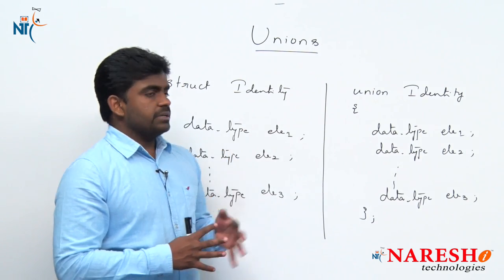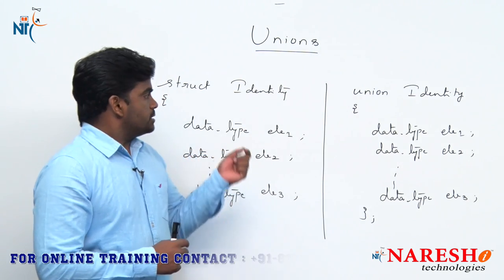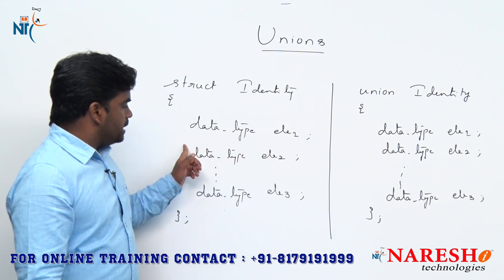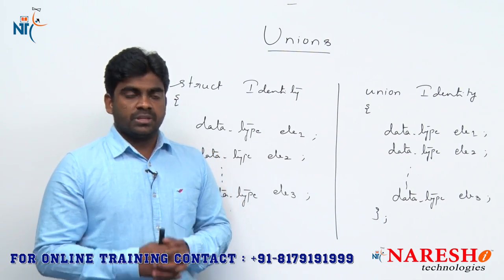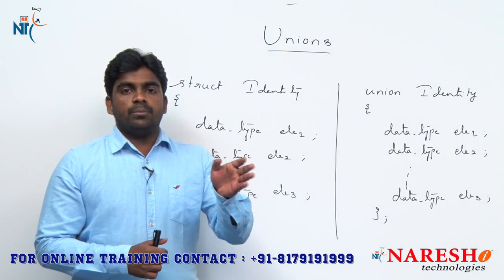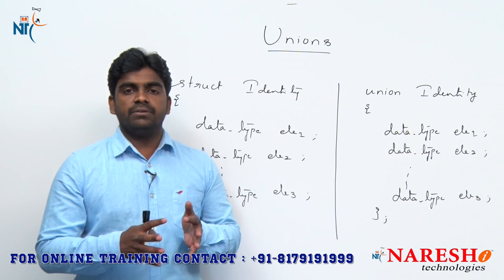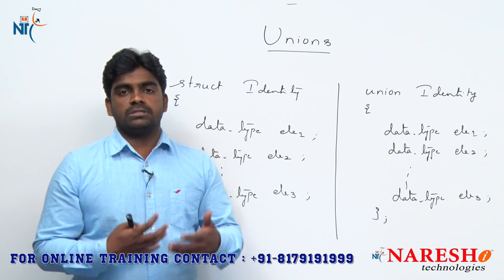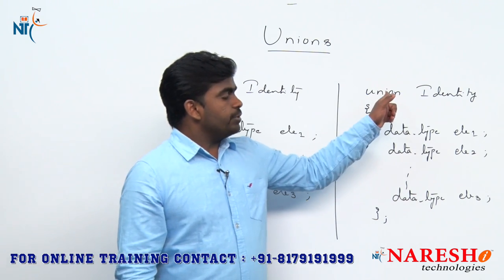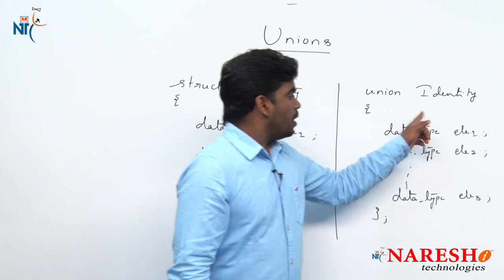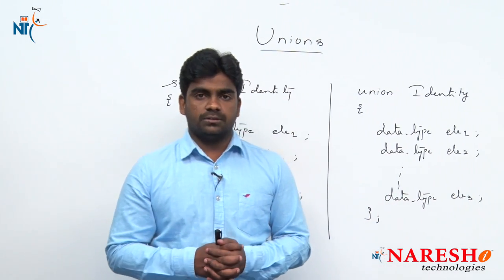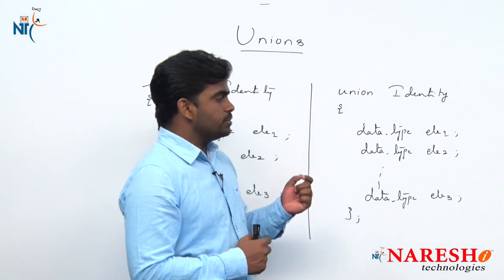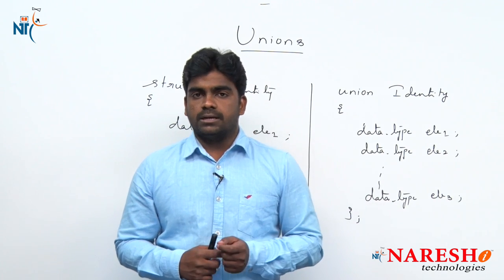What is the main difference between structure and union? Whenever you are allocating memory to a structure variable, all the elements get independent memory locations. Suppose N elements are there, N memory locations will be created. At a time we can store all N elements and at a time we can retrieve and process all the elements. But in case of union, all the elements share the same memory location — at a time all the elements we cannot process. If you see one example of both, then you can understand.